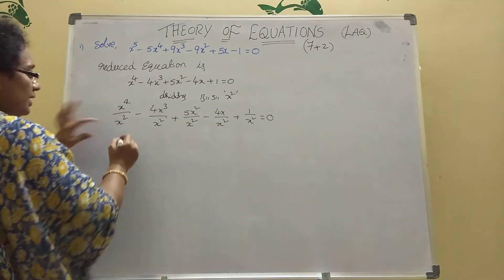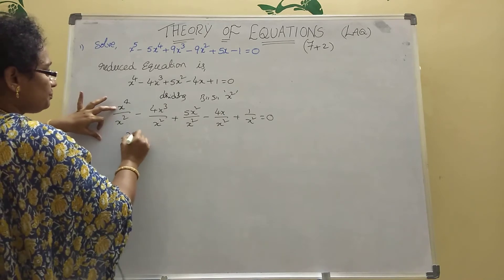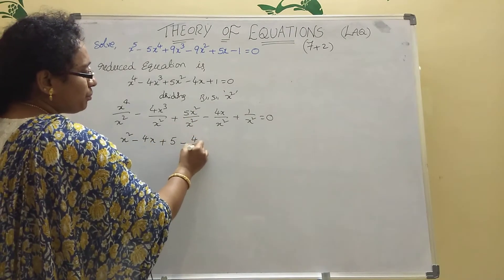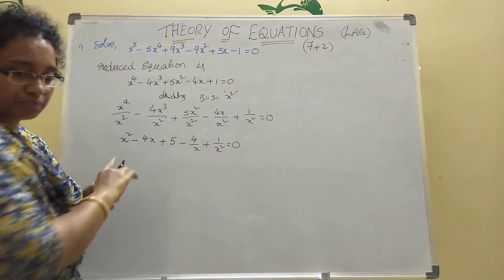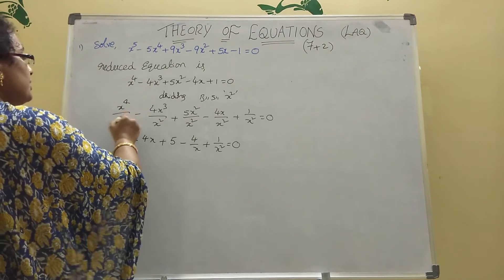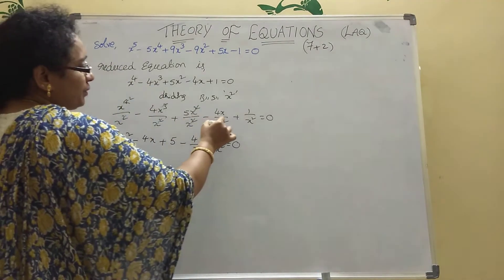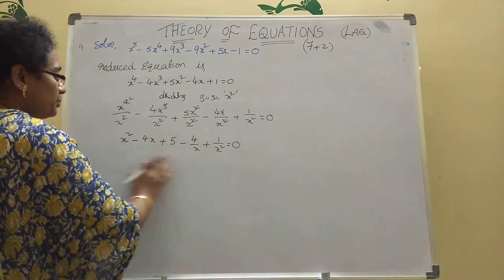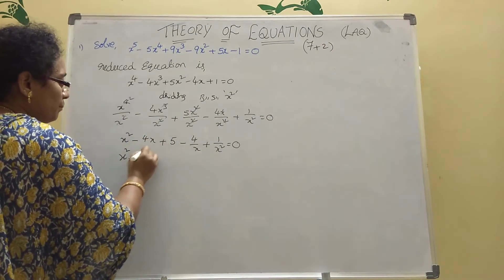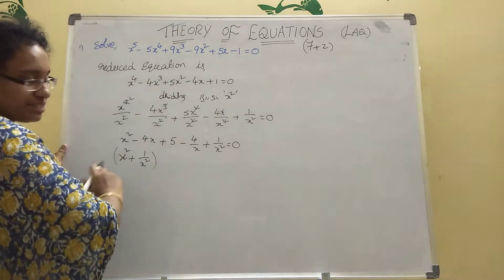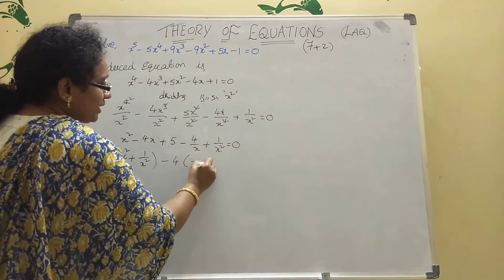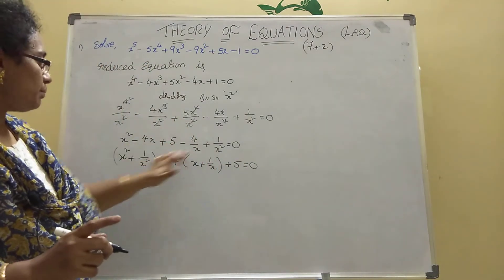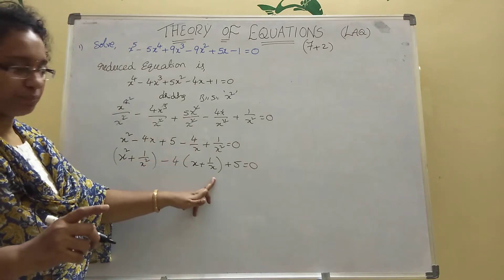Then remaining: x^2 - 4x + 5 - 4/x + 1/x^2 = 0. Now group the x^2 terms: (x^2 + 1/x^2) - 4(x + 1/x) + 5 = 0. How many x^2 terms — x^2 + 1/x^2, minus 4 into (x + 1/x), plus 5 = 0.